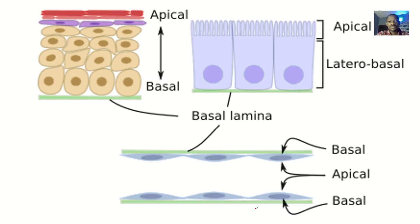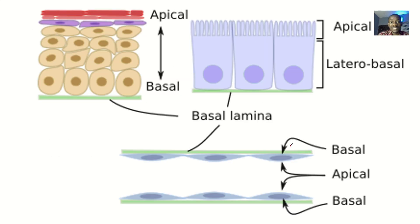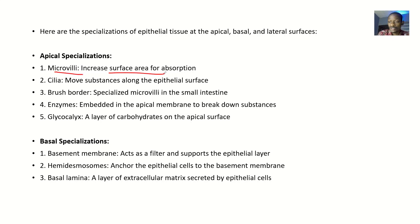The first specialization we'll be talking about is the apical one — how the cell has developed its top for absorption. Apical cells can have microvilli, which increase the surface area for absorption.